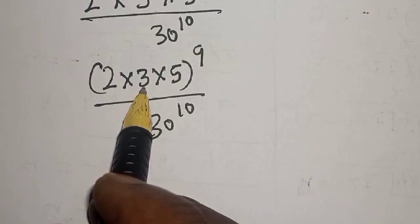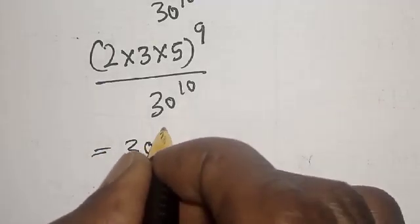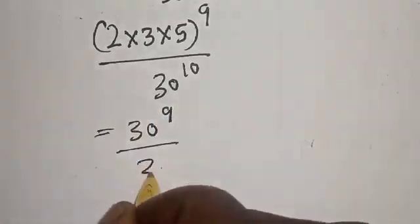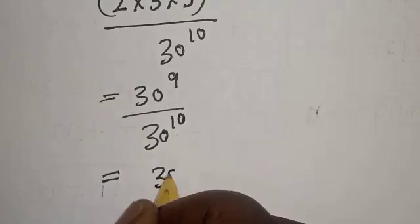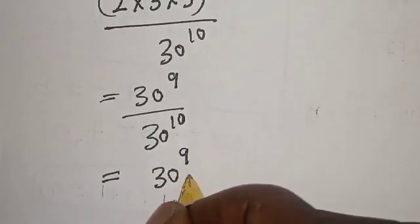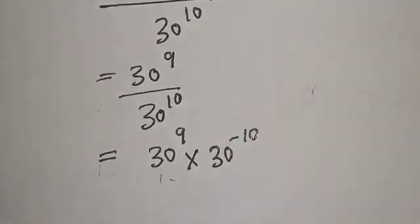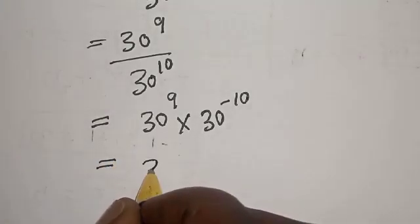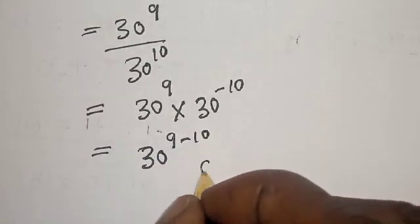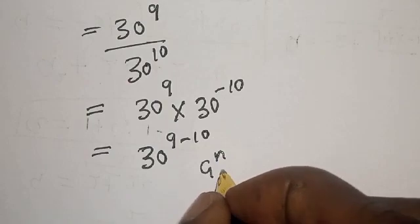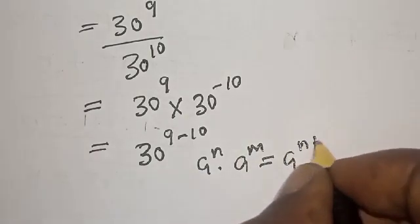This gives 30 raised to power 9 divided by 30 raised to power 10. Then, this is equal to 30 raised to power 9 minus 10, using the rule that A raised to power N divided by A raised to power M is equal to A raised to power N minus M.